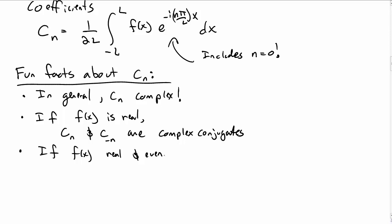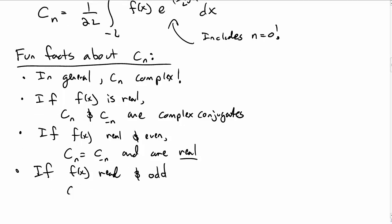If f of x is real and even, it turns out we know even more, then c sub n is equal to c sub minus n, and actually, these are all real numbers. In contrast, if f of x is real and odd, then c sub n is equal to minus c sub minus n, and these are pure imaginary coefficients. Okay, so these are just some fun facts that are useful to know about the c sub n's.